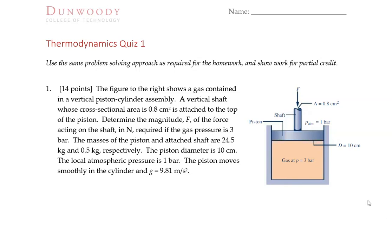Welcome to Dunwoody College of Technology Mechanical Engineering Thermodynamics. This is a solution to quiz one from fall of 2019. We have a piston cylinder assembly with some gas in it, and we're looking at a vertical shaft where there's a force applied to the tip of that shaft that is going to keep this thing in equilibrium, in mechanical equilibrium.